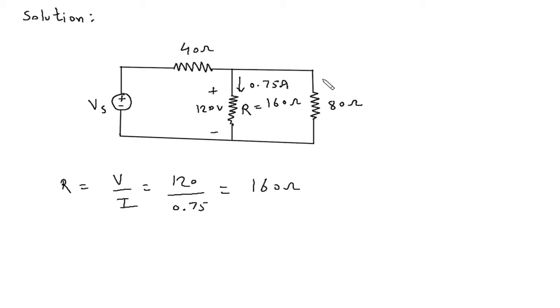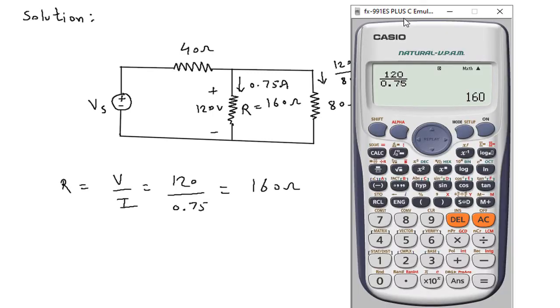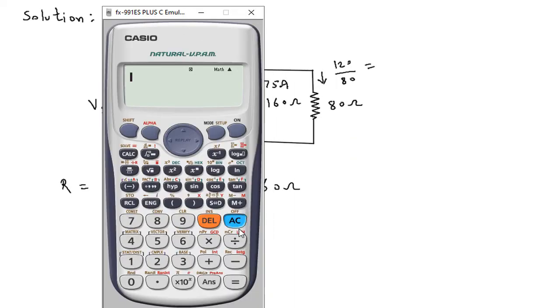So from this we can find the value of this I. So it will be 120 volt divided by this 80 ohm. 120 by 80 is equal to 120 by 80.